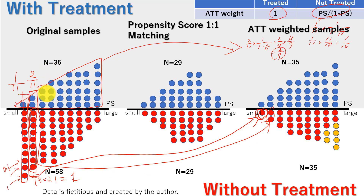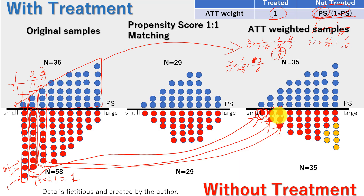For the next column, the propensity score is 3/11. The ATT weight computes as 3/11 times 1 over (1 minus 3/11) = 3/8. We give each of the 8 untreated dots a weight of 3/8, so 8 becomes 3. As you may notice, the number of red dots gets equalized with the number of treated people. By giving this weight to each untreated observation, the distribution between treated and untreated becomes balanced.